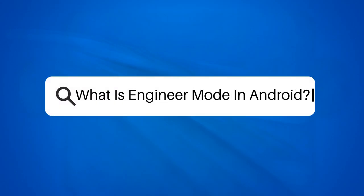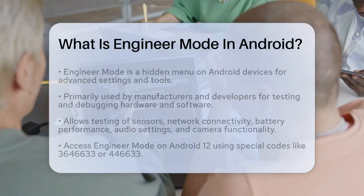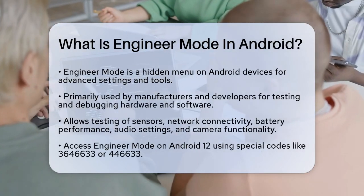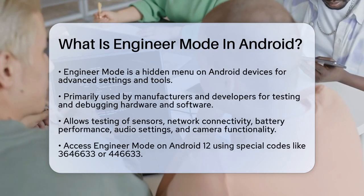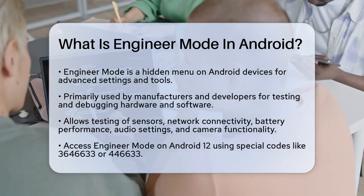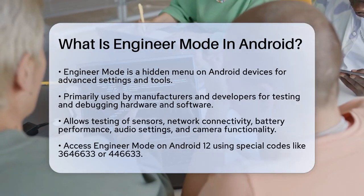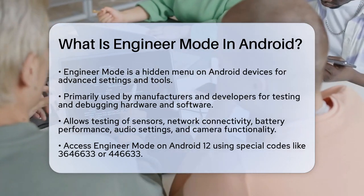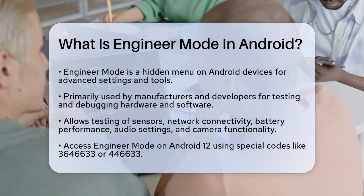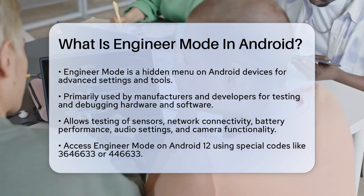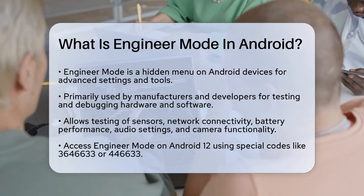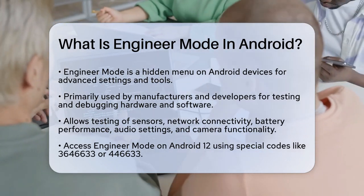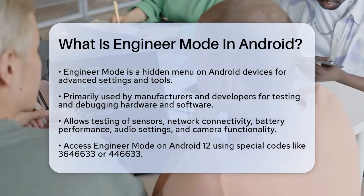What is Engineer Mode in Android? If you've ever wondered what lies beneath the surface of your Android device, you might have stumbled upon something called Engineer Mode. Engineer Mode is a hidden menu on Android devices that allows users to access advanced settings and tools. It's primarily used by phone manufacturers and developers to test and debug various aspects of the device's hardware and software.